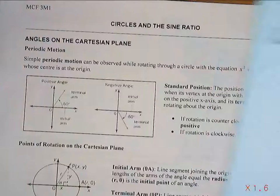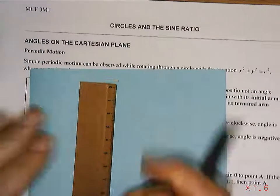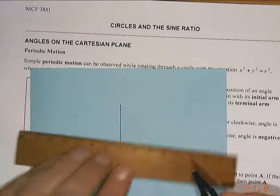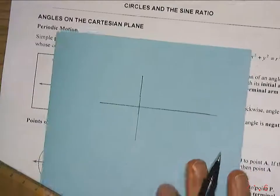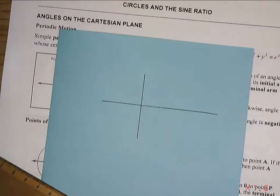Okay. So, a Cartesian plane. When I talk about a Cartesian plane, I'm going to be talking, at all times, about something that looks like this. The scales I put on them are indifferent. I can put any sort of scale there. And we're going to talk about angles in a Cartesian plane.